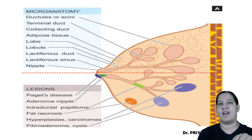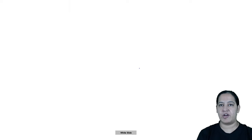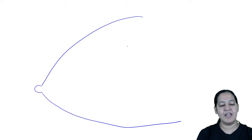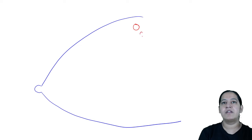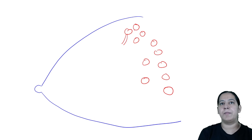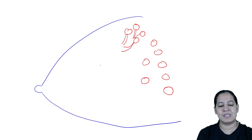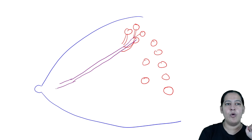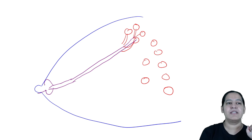You can see the diagram of a breast here. I would like to draw one diagram to explain. This is the breast — this is the nipple. The entire breast has multiple ductules inside it. These are small ductules or acini. These ductules and acini open into terminal ducts. Multiple terminal ducts open into lactiferous ducts. Just before opening into the nipple, the lactiferous duct has a dilation known as the lactiferous sinus.